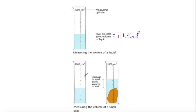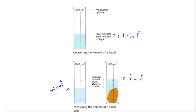Then we place the irregular object into the cylinder and there will be a difference between the initial level and the final level. The difference between the initial reading and the final reading gives the volume of the irregular object.